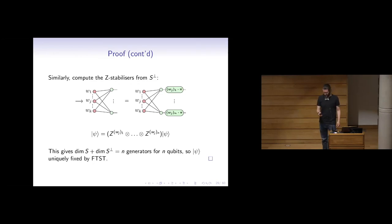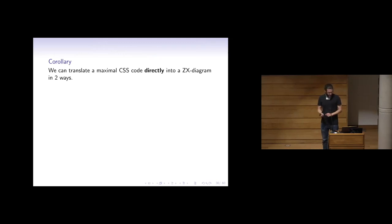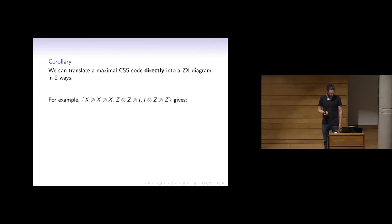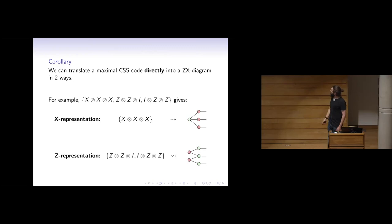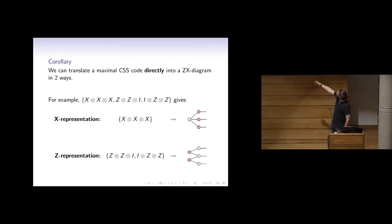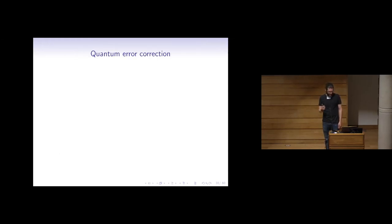A corollary: we can translate a maximal CSS code directly into a ZX diagram in two ways. For example, given a CSS code for the first time, I can look at the X generators and draw it — each X generator gives a green spider connected to red spiders. Or I look at the Z generators — each gives a red spider connected to green spiders. Then I recognize it's a GHZ state from the picture. Almost no calculation is needed to get a ZX diagram from a CSS code.